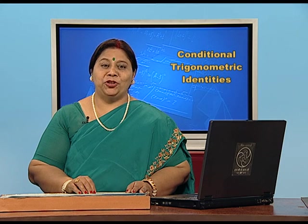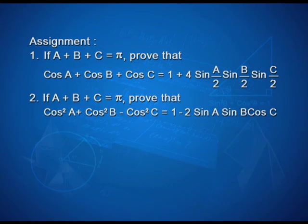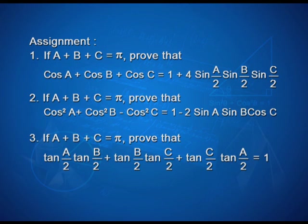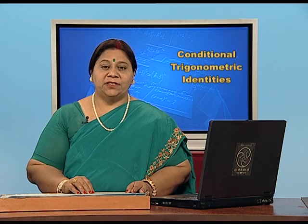Students, there is an assignment for you. Question 1: If A plus B plus C equals pi, prove that cos A plus cos B plus cos C equals 1 plus 4 sin(A/2) sin(B/2) sin(C/2). Question 2: If A plus B plus C equals pi, prove that cos²A plus cos²B minus cos²C equals 1 minus 2 sin A sin B cos C. Question 3: If A plus B plus C equals pi, prove that tan(A/2)tan(B/2) plus tan(B/2)tan(C/2) plus tan(C/2)tan(A/2) equals 1. Today you have learned how to solve conditional identities of various types. Thank you.